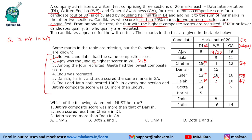Among the four recruited, Geeta had the lowest composite score, so Geeta should be fourth on the recruitment list. Indu was recruited. Danish, Harini, and Indu scored the same marks in GA — let's call that X. The last condition says Indu and Jatin both scored 100% in exactly one section, and Jatin's composite score was 10 more than Indu's.